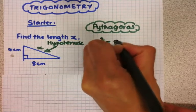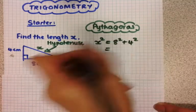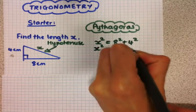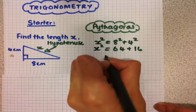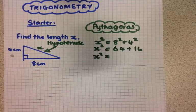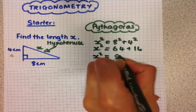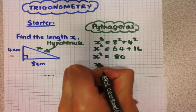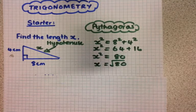So 8 squared plus 4 squared. It doesn't matter about the order of those because we're adding. So 8 squared is 64 plus 4 squared is 16, which is 80. And then I'm going to do the square root of 80.